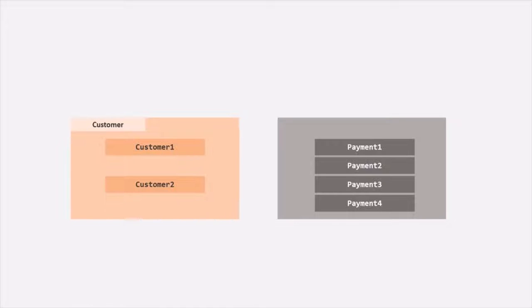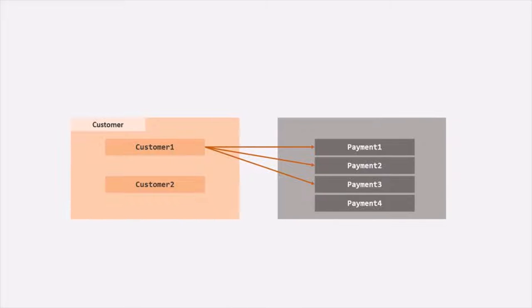Let's say we have a customer collection where we are storing all the customers. Each customer is going to have a payment method. For example, a customer can add different cards for doing payment. Customer 1 has added three payment methods — three cards using which he can make a purchase. And customer 2 has added only one payment method, one card through which he can make a purchase. So this is an example of a one-to-many relationship.